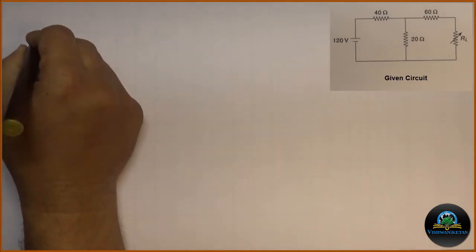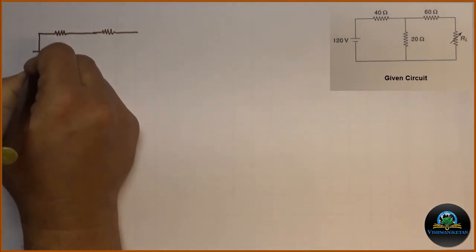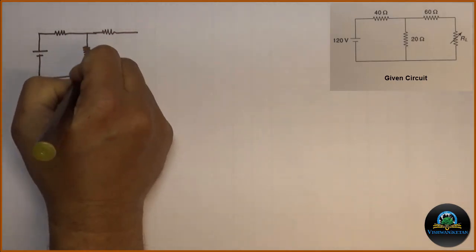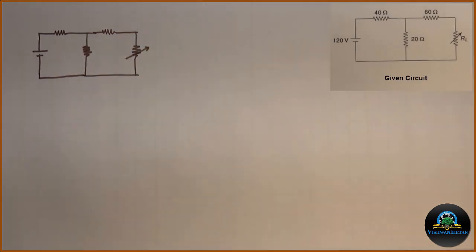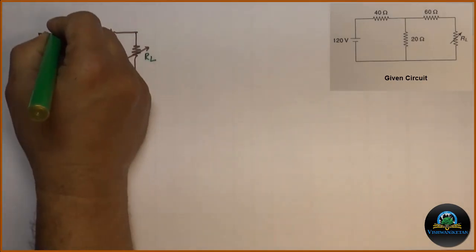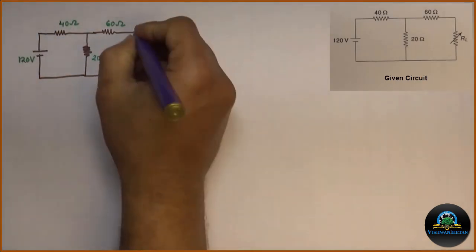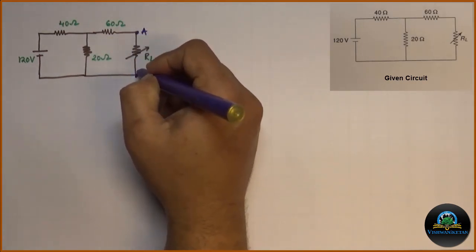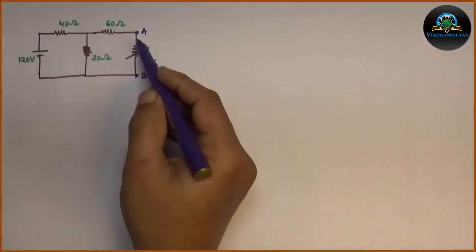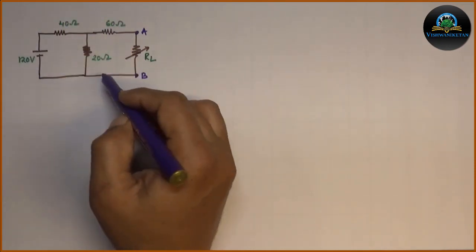In the circuit we will mark the load terminals. These are terminals A and B, which are marked across RL. The RL will be made equal to equivalent resistance of the existing circuit.